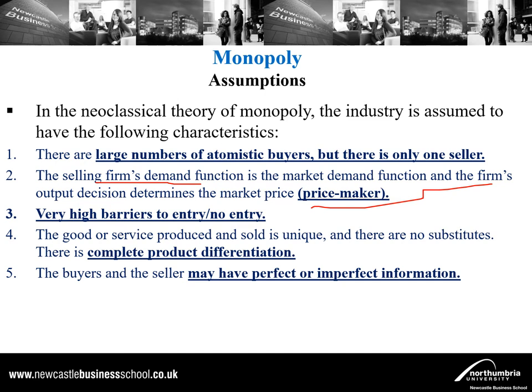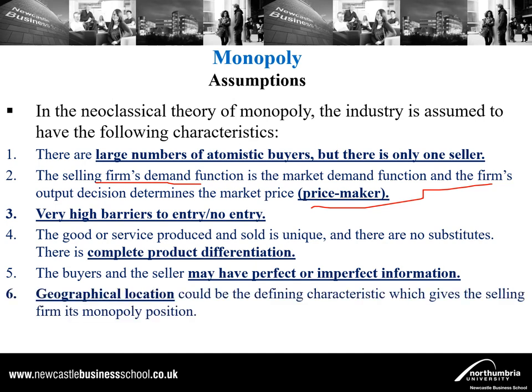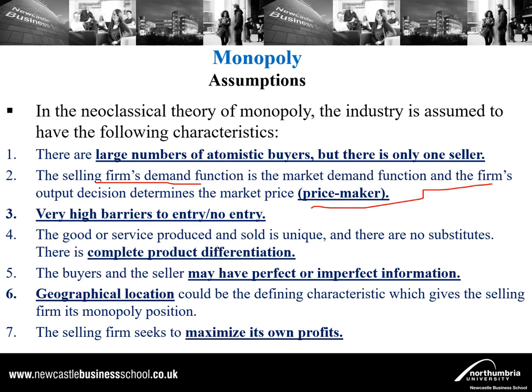Buyers and sellers may have perfect or imperfect information — they might know everything or not know everything relating to quantities, prices, and other aspects of the market and the product being sold. Additionally, geographical location can be a defining characteristic giving the selling firm its monopoly position. For example, there may be many competitors nationally, but if most don't operate in a specific locality, there is only one supplier to that locality — hence a monopoly arises in a localized area.